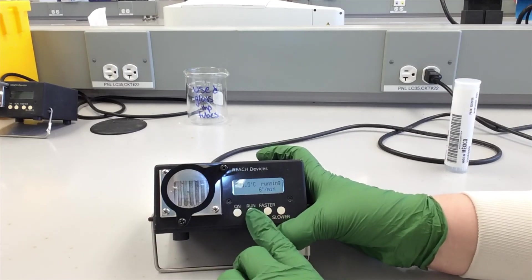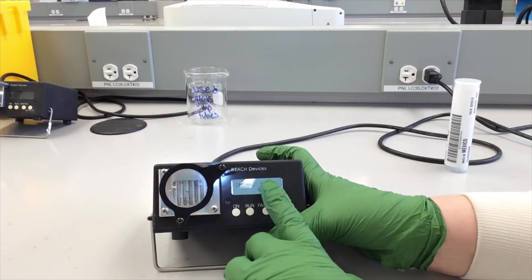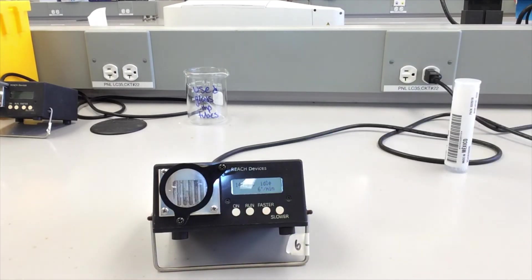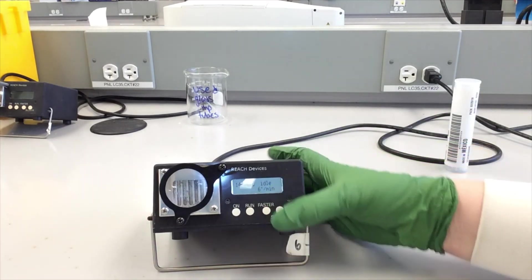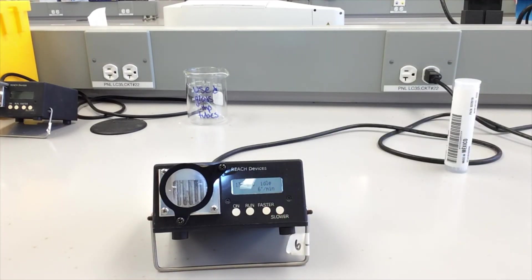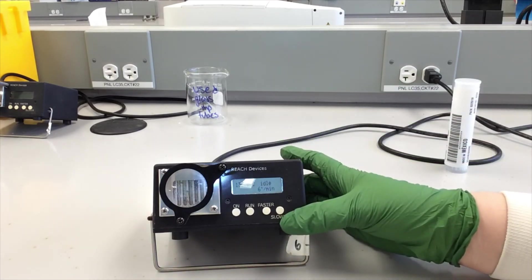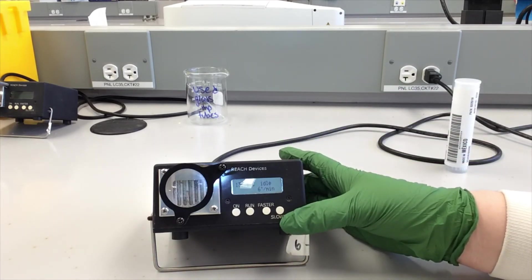We're done with this. We can press run and then it'll say idle. That means it's going to cool down. Just let it cool down so that the next person can use it. And that's how you take an experimental melting range.